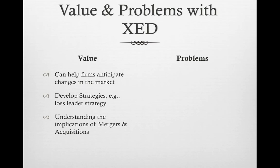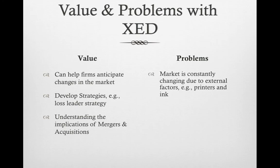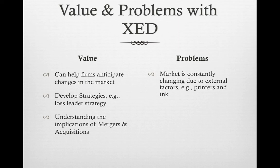There are also some problems with XED. One is that the market is constantly changing. Printing companies may calculate that XED for printers and ink is very strong — they're very strong complements. But there are other things happening: people are using less paper. Schools, governments, and home users are generally printing less, and therefore using less ink. These changes in related markets can make XED a little bit misleading.